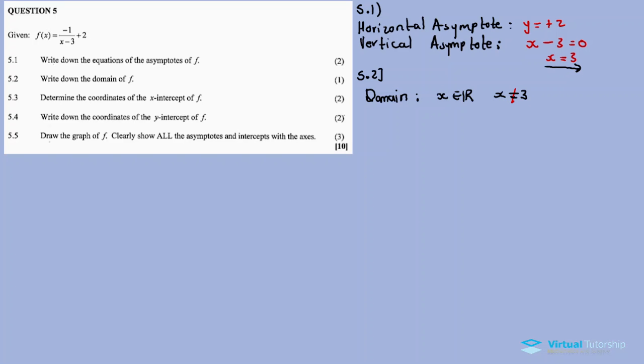You exclude any vertical asymptotes because the graph approaches and never touches this point. It crosses at x equals 3 and also never touches x equals 3.